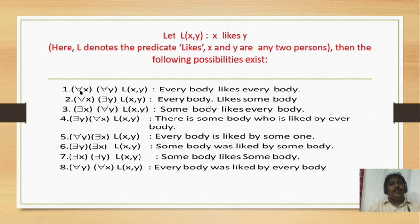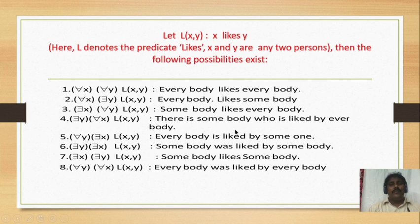So, 'for all' means it is a universal quantifier and 'there exists' means it is an existential quantifier. This concludes the topic of universal and existential quantifiers and also predicates.